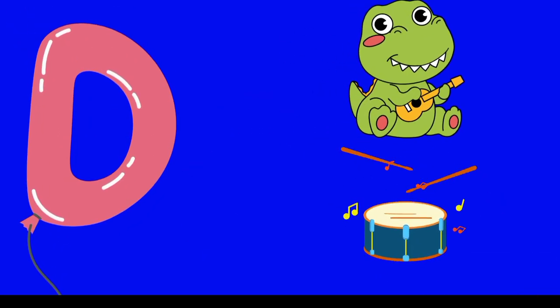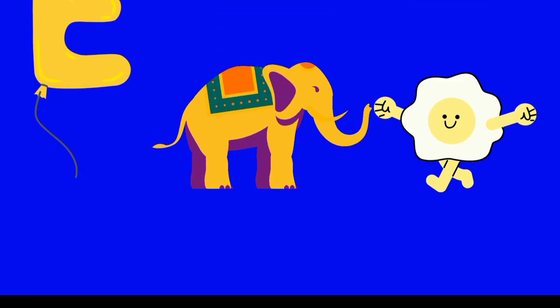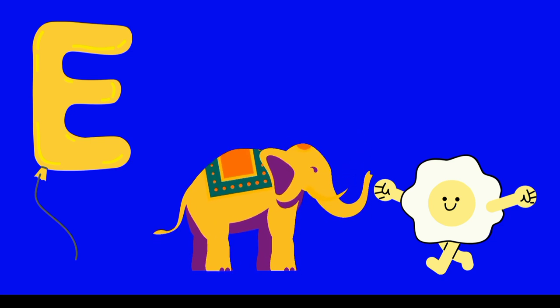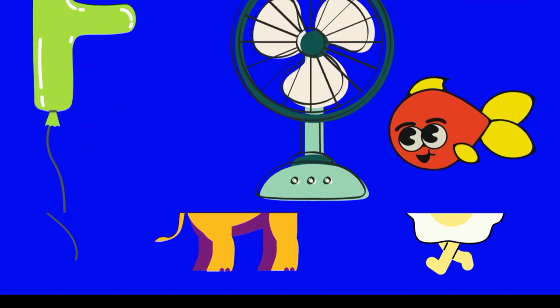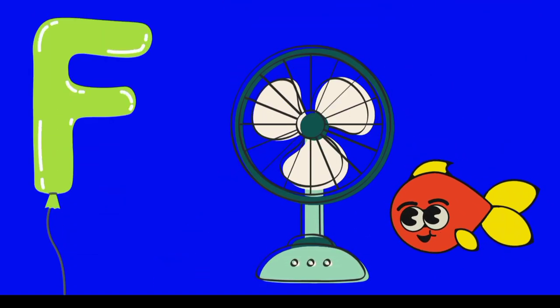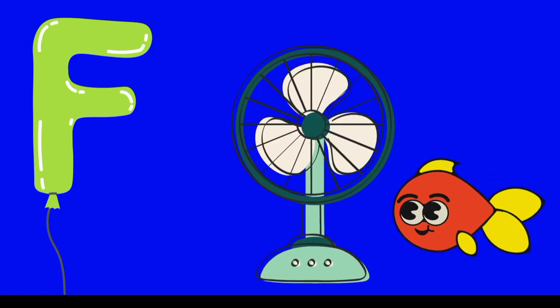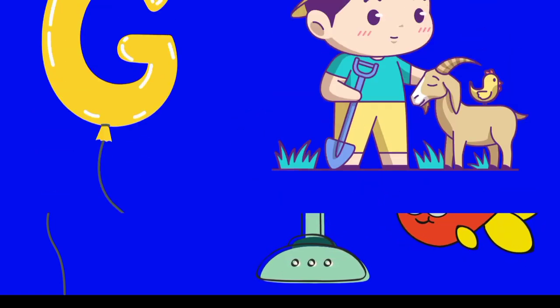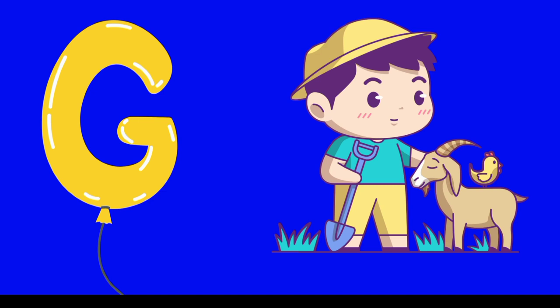D is for dinosaur and D is for drum. E is for elephant and E is for egg. F is for fun and F is for fish. G is for goat and G is for gardener.